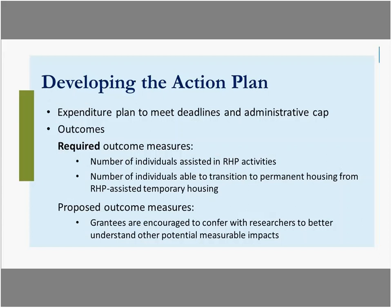There has to be an expenditure plan to meet the deadlines, and there is also an administrative cap. For RHP, it's a 5% total administrative cap from the entire grant. There's no match required for administrative funds — good news for agency managers — so within the 5% limit, there's 100% coverage of your administrative costs.